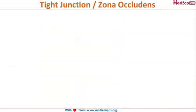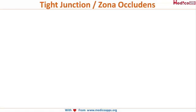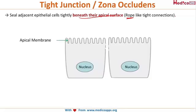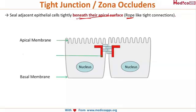Tight junctions are also known as zona occludens. By the name itself you can understand they seal adjacent epithelial cells to each other tightly beneath their apical surface. They form a rope-like tight connection, adhering both adjacent epithelial cells. The tight junction is located just beneath the apical surface, binding one cell to the next.